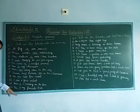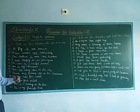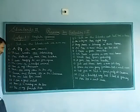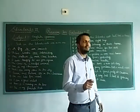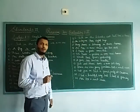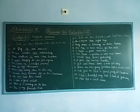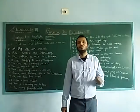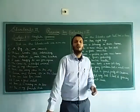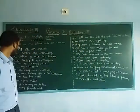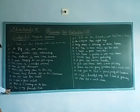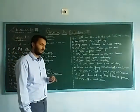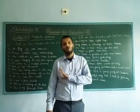Ninth number: we are late for the school — we blank late for the school, answer is 'are'. Tenth number: I blank a good artist — the answer is 'am', I am a good artist. Eleventh number: there is a monkey on the tree — answer is 'is'. Twelfth number: this blank my favorite book — this is my favorite book.